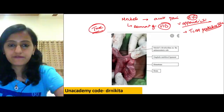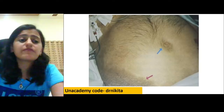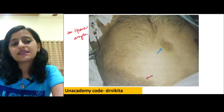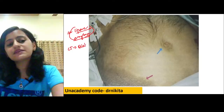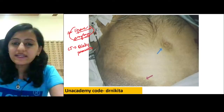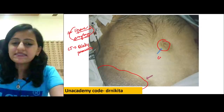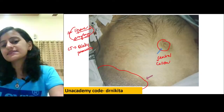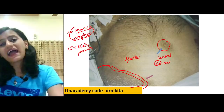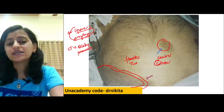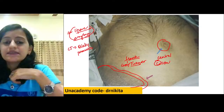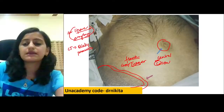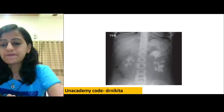In acute pancreatitis, serum lipase and amylase are elevated; CT shows a bulky pancreas. Cullen's sign is central (periumbilical) discoloration; Grey Turner's sign is flank discoloration — both seen in acute pancreatitis.